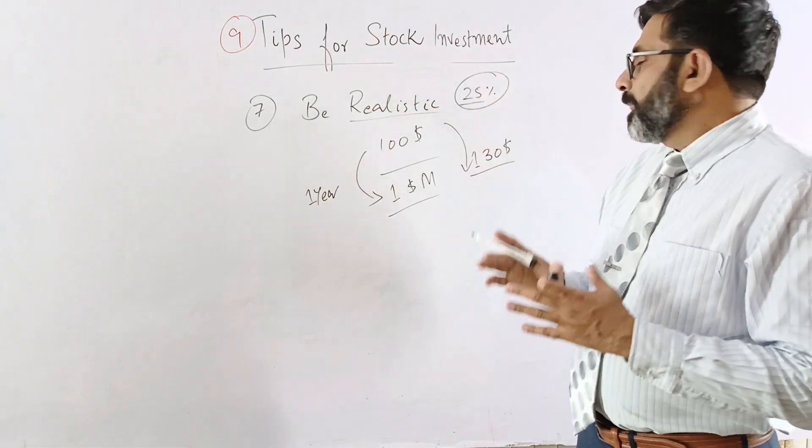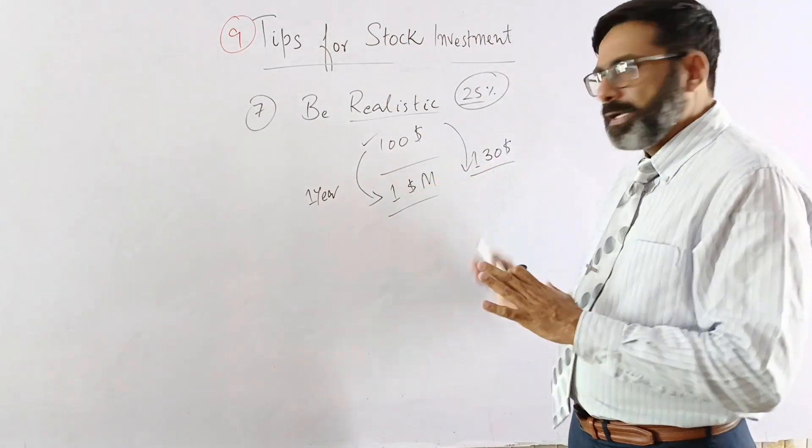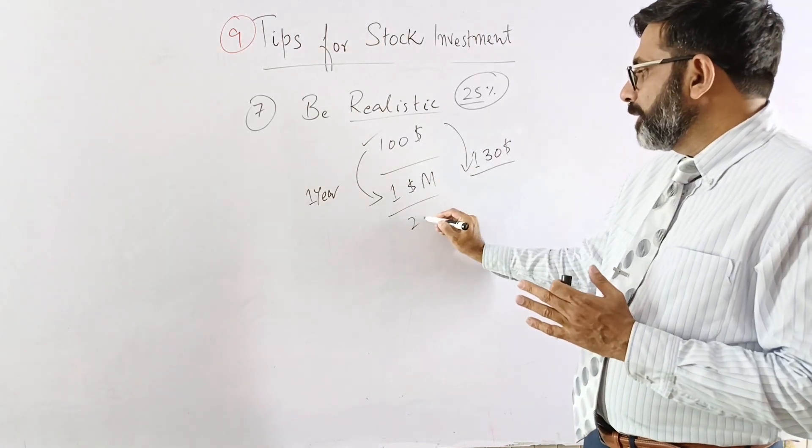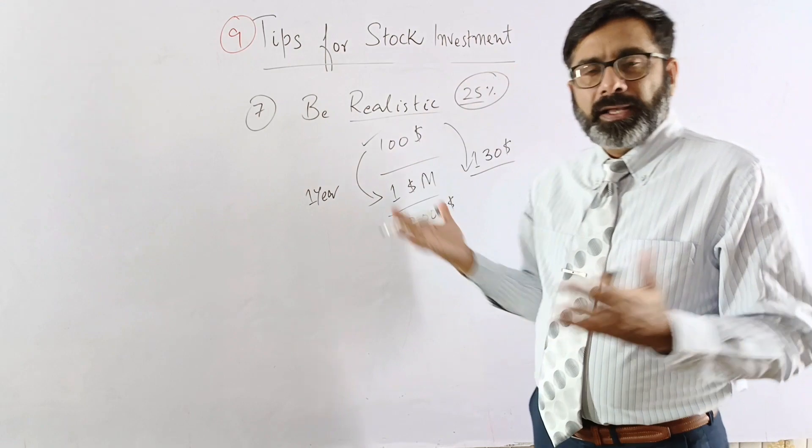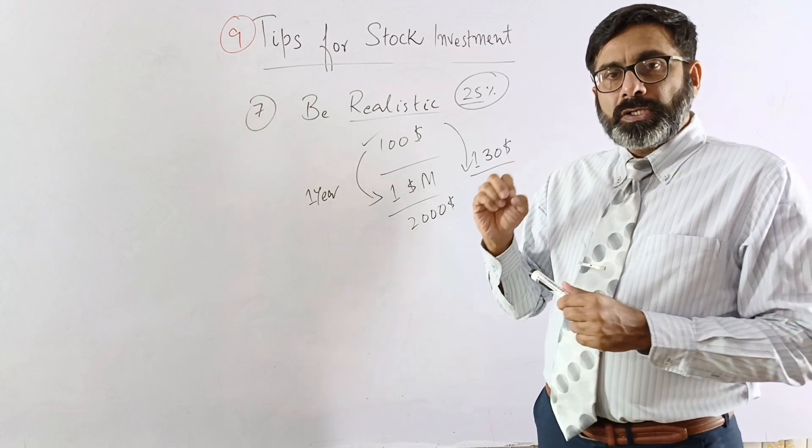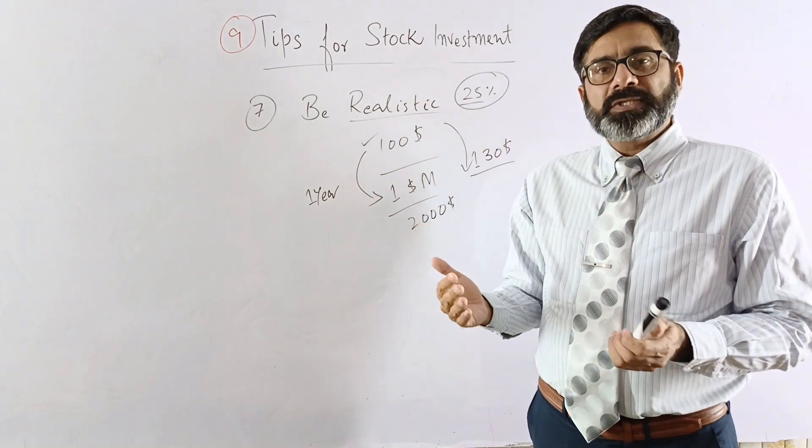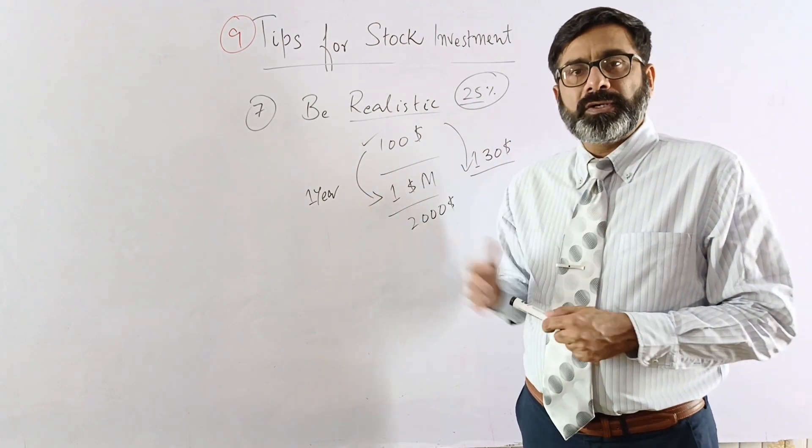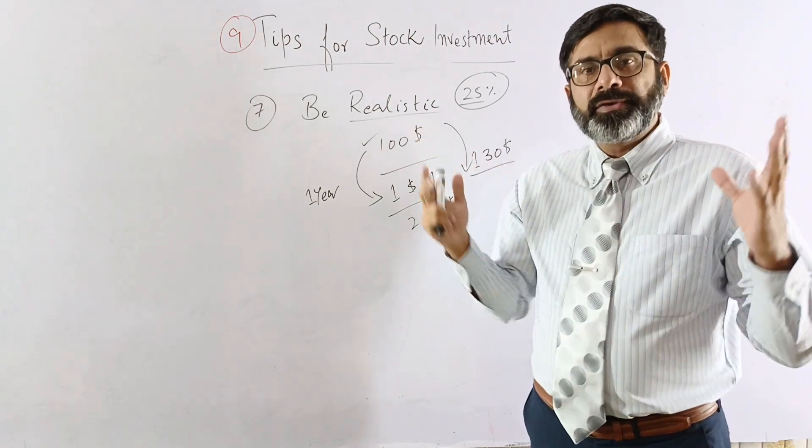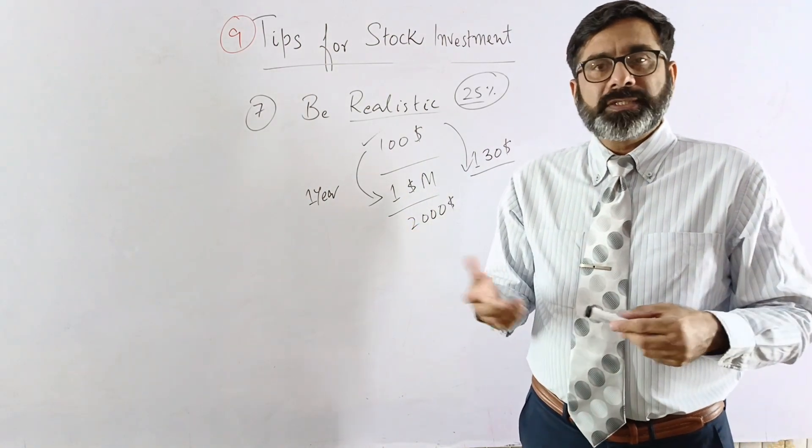For example, if it is 25% and you have invested $100 and you are just looking for $30, it is realistic. There is no issue. But if you are trying to get like $2,000 or any other amount which is obviously not realistic, it will be difficult for you. So your goal should be realistic. What you want to achieve may be more than the average, but obviously it should not be out of context. You should not be so passionate that investing a small amount, you are having a big dream that within a few days or within one year, I will be a billionaire or millionaire. It is not possible.